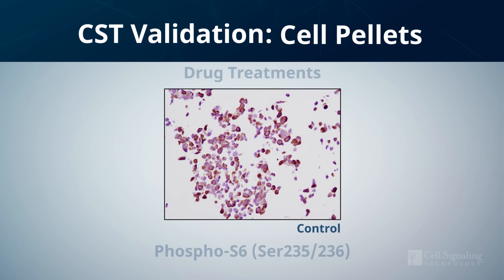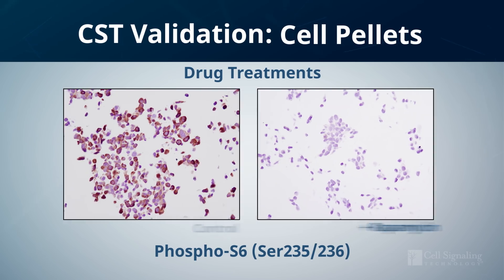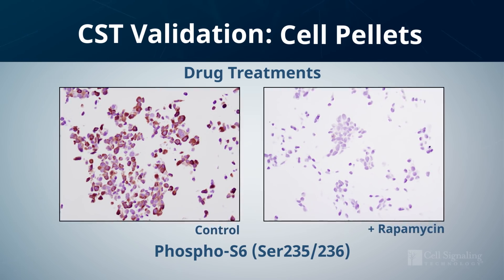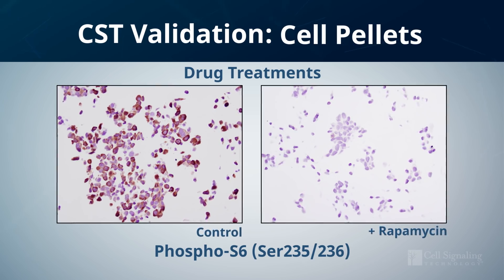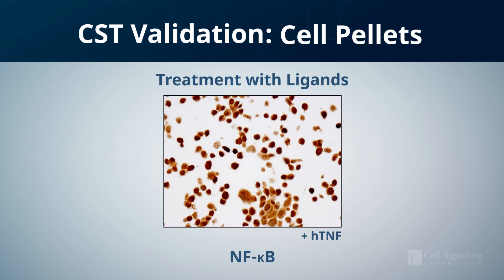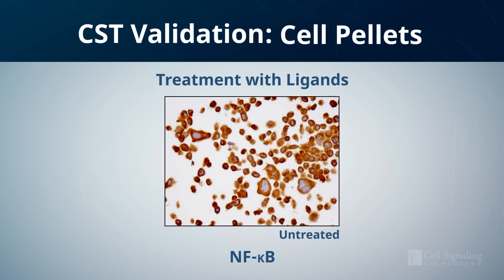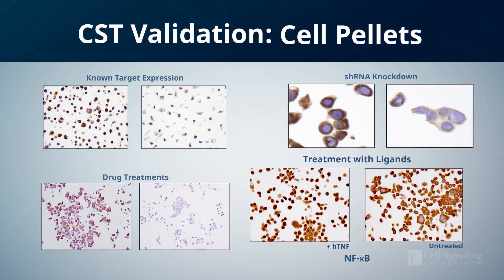Treatment with small molecule activators or inhibitors can also be used to modulate target expression during validation of both total and phospho-specific antibodies. Treatment with ligands can also be used with cell pellets to modulate the target protein by inducing or inhibiting expression, or, as shown here, to change its localization.